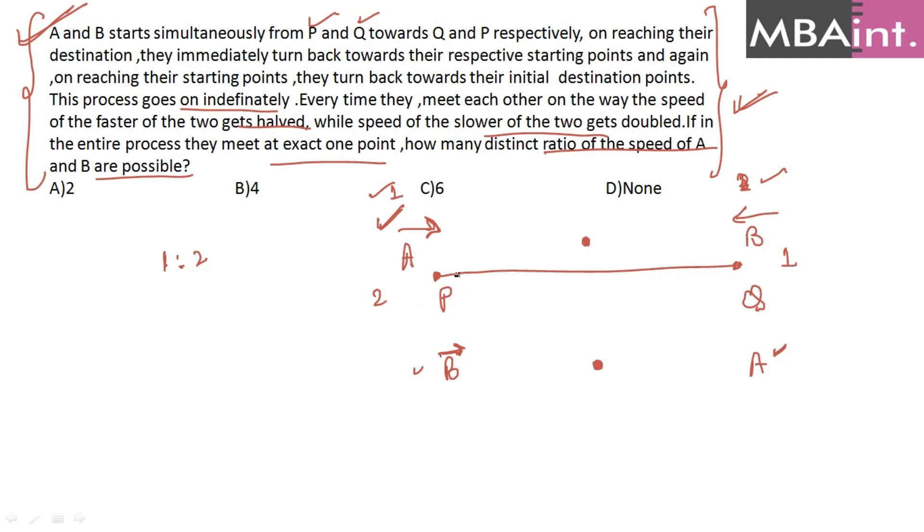This is only possible because every time their speed is getting exchanged—the faster one becomes slow and the slower one becomes fast, and they are meeting exactly at one point only. The point is not changing. If the point changes, their ratio might be different.